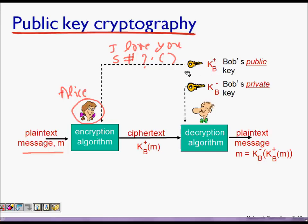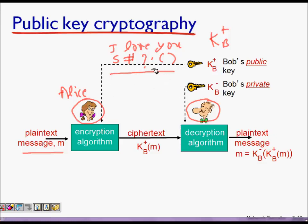Alice knows the public key of Bob, denoted kb+. The private key to decrypt that message is held only by Bob, denoted kb−. The encrypted message cannot be read by anyone except the person who has the private key kb−. So kb+ is the shared public key known to all, but kb− is not known to anyone except Bob.